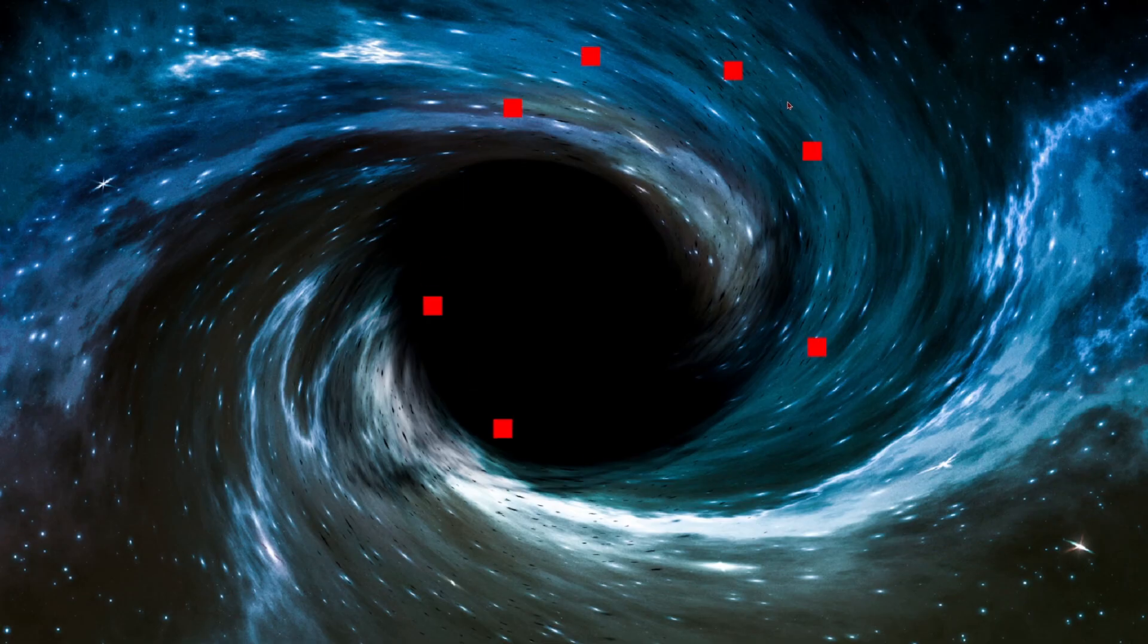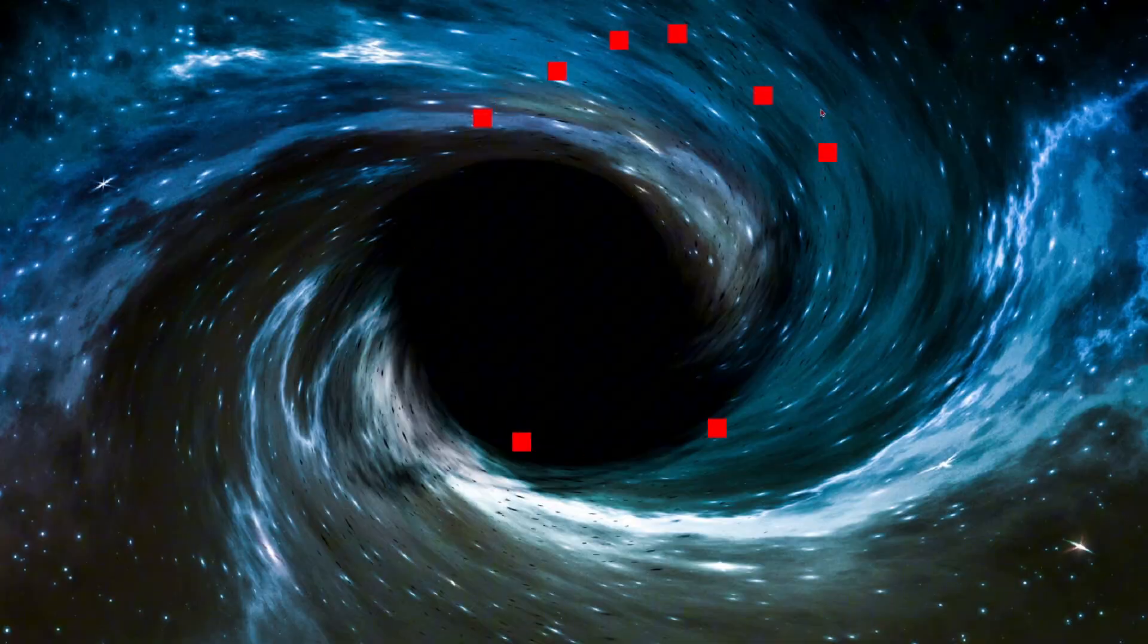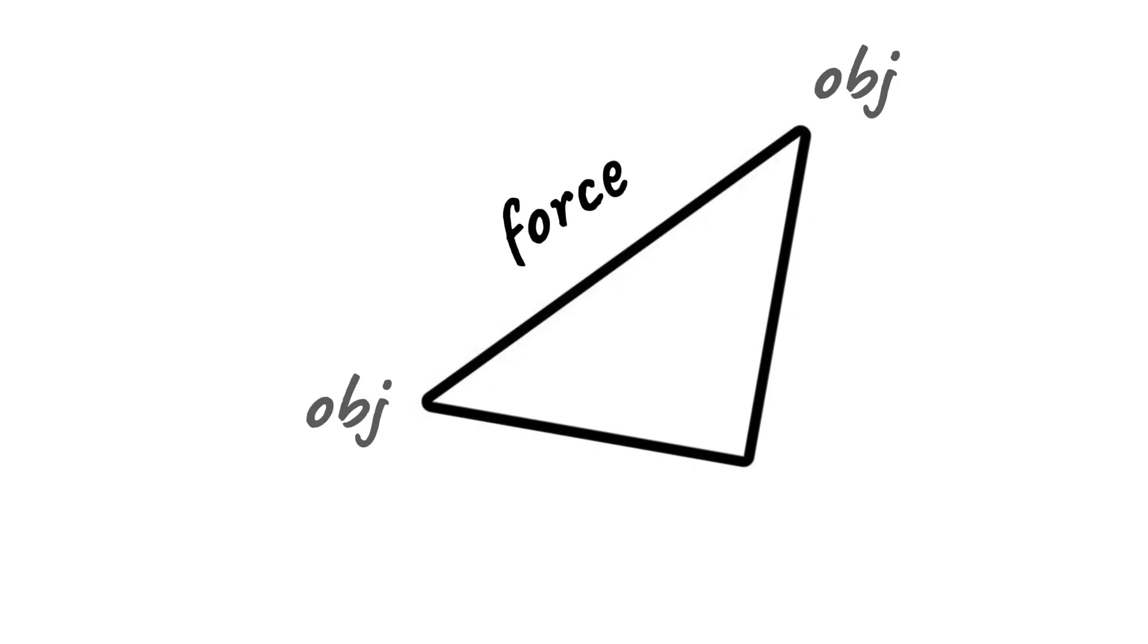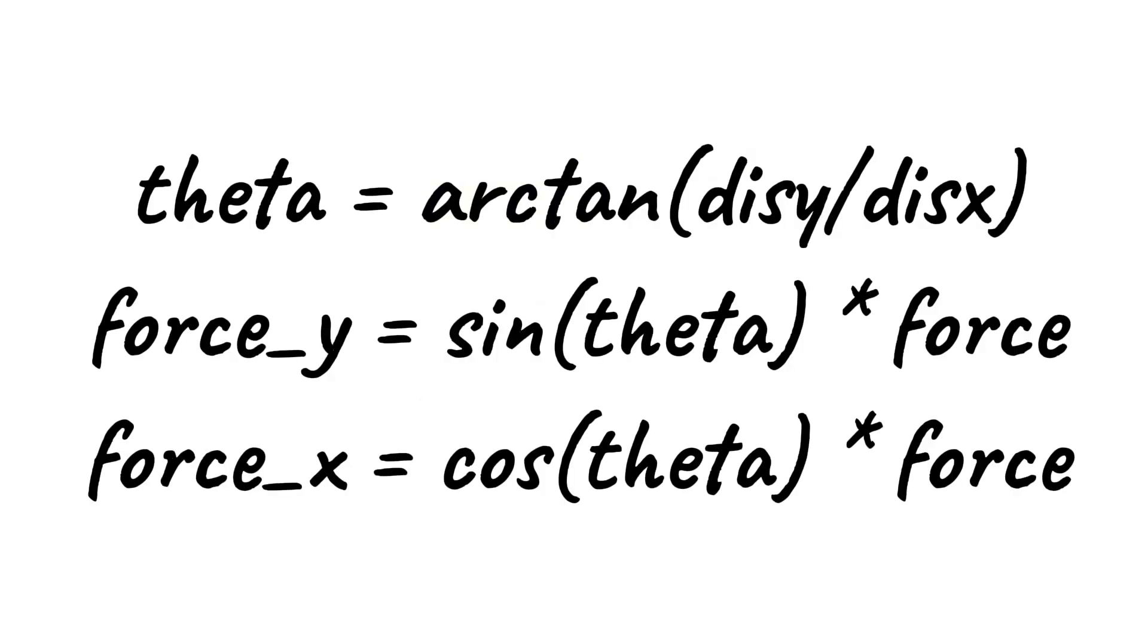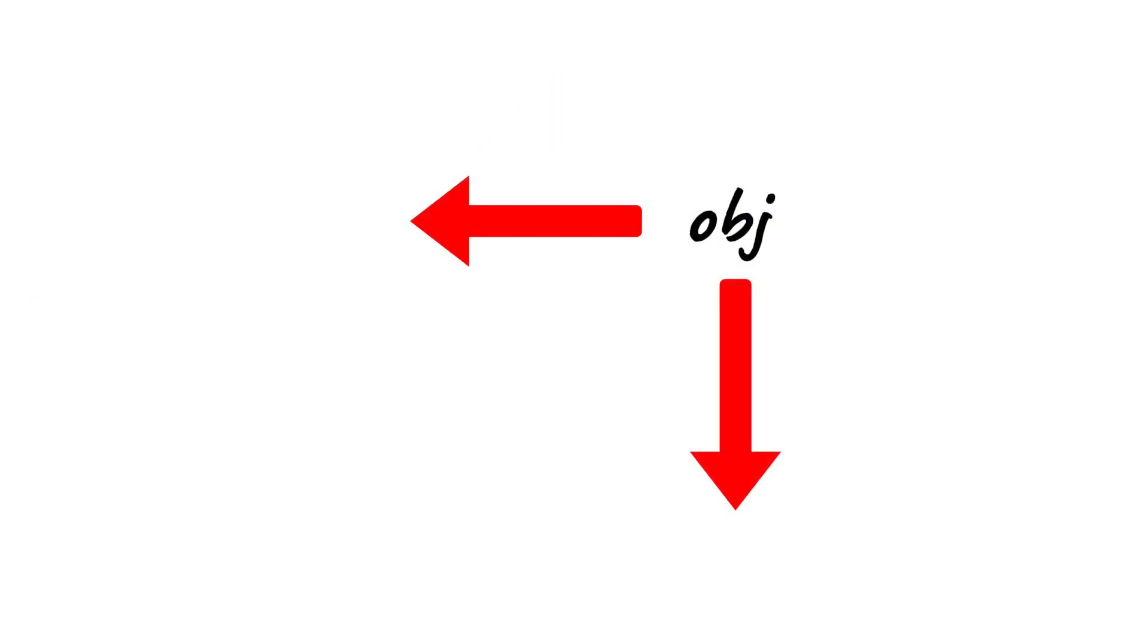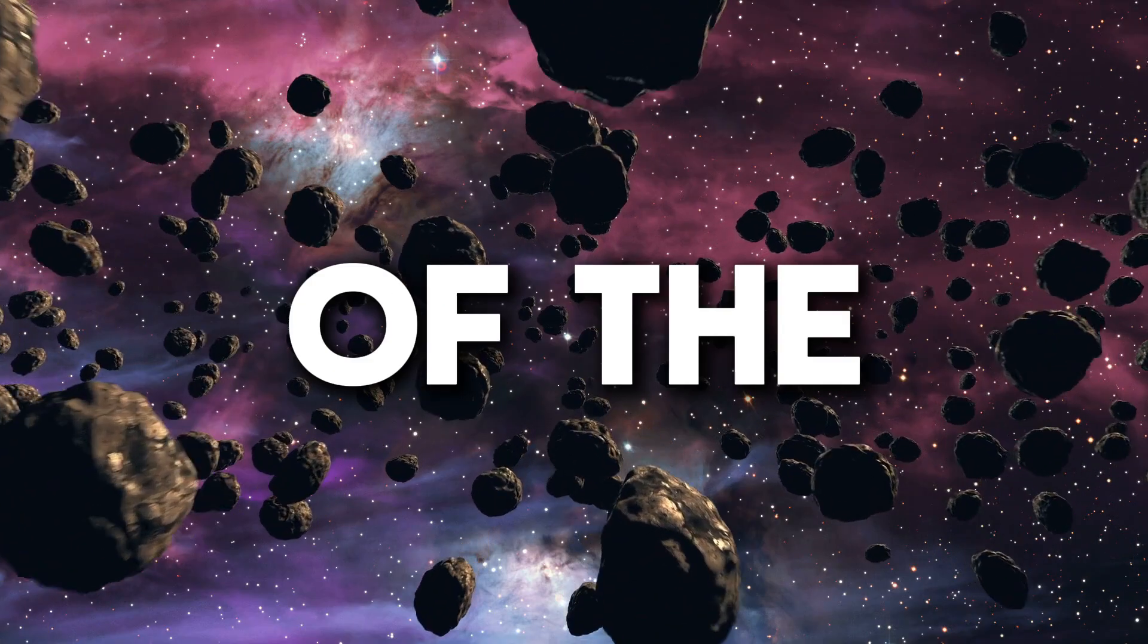To start, I'm going to explain the basics of the current simulation. It uses this formula to calculate the force of attraction between two objects, and then does some trigonometry to break that force down into an X and Y component, which are then added to the object's position, but that's not really the point of the video.